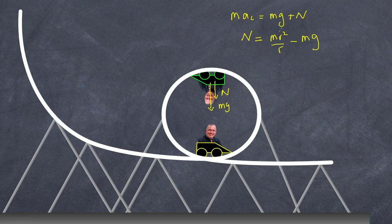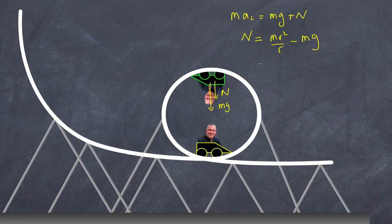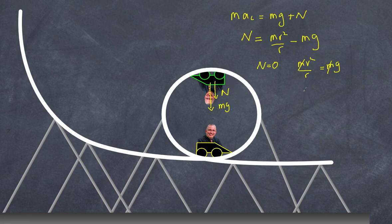This means the centripetal force must always be greater than the weight force for there to be a normal force pushing me inward. If velocity is too small or radius too large such that mv squared over r is less than mg, I'll fall out of the loop. The bare minimum condition is when N equals zero, giving mv squared over r equals mg. The masses cancel out — it doesn't matter whether I'm 60 or 120 kilos — giving v squared over r equals g. So as long as you know the radius, you can calculate the minimum velocity needed.